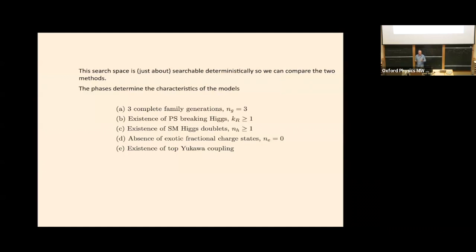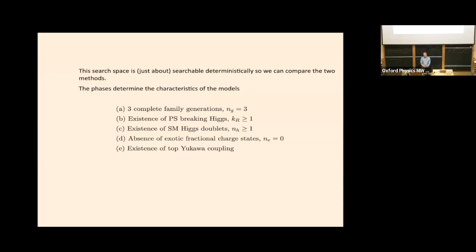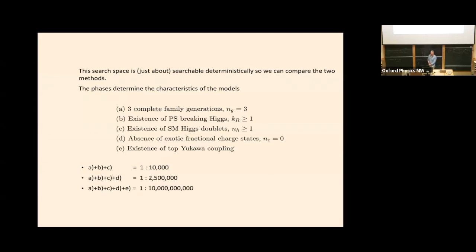This is how we set up our genetic algorithm. We have to define a fitness function, and the fitness function can be essentially whatever my desires are. I'm going to ask for three generations of chiral states, require the existence of Pati-Salam breaking Higgs, a standard model Higgs doublet (one or more), absence of fractionally charged states, and also ask for a top Yukawa coupling. Those are my minimal phenomenology requirements.